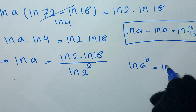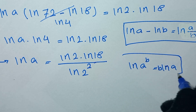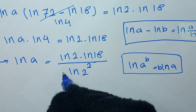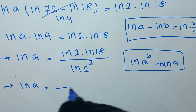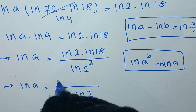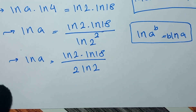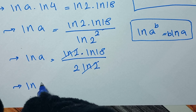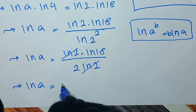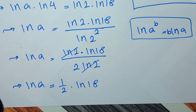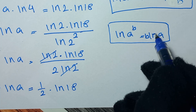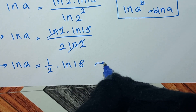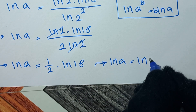From log rules, ln of a to the power of b equals b times ln of a, so we can take the power outside. This gives ln of 4 as 2 times ln of 2. For the numerator we have ln of 2 times ln of 18, and the ln of 2 cancels. So ln of a equals ln of 18 over 2, which is one-half times ln of 18. Using the power rule in reverse, this equals ln of 18 to the power of one-half.